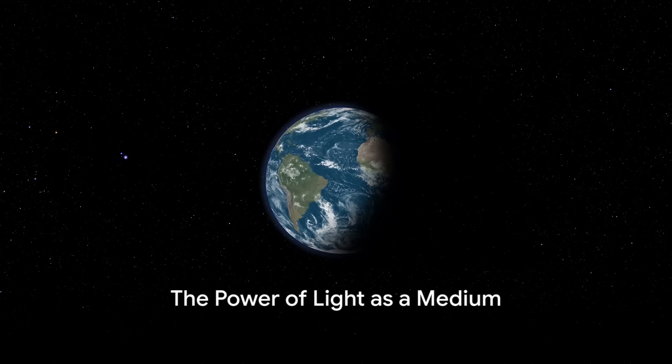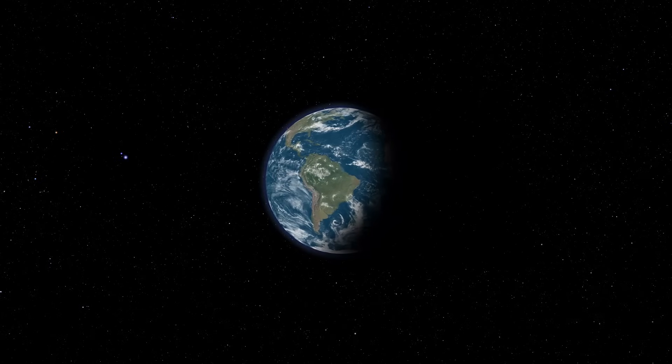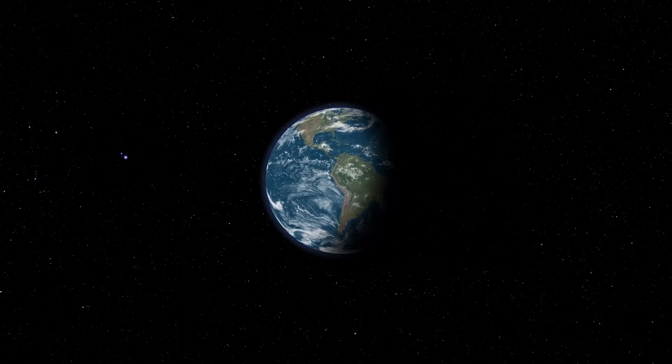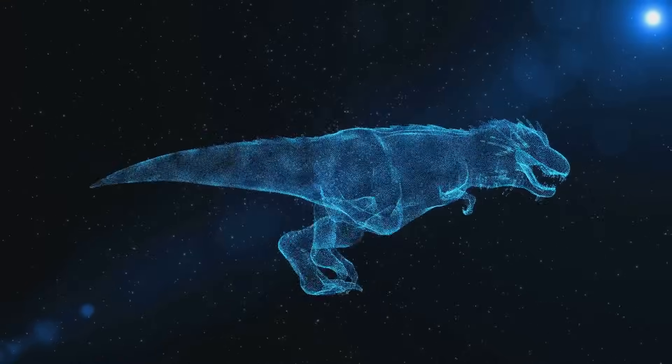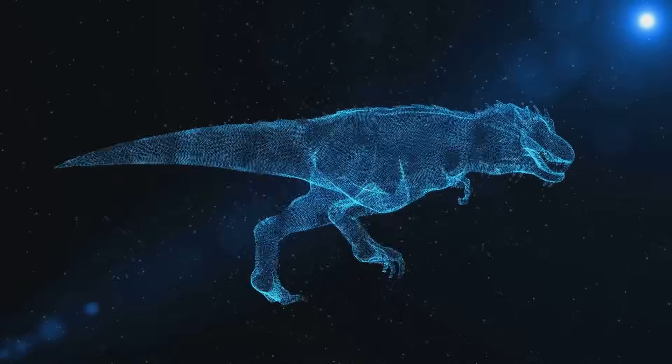Imagine, if you will, an alien species observing Earth from a vantage point 6 million light-years away. What would they see? Dinosaurs roaming our planet, perhaps? Intriguing as that might sound, it's not quite accurate.